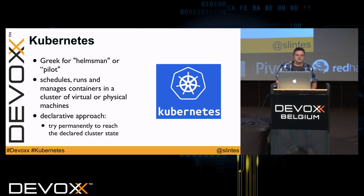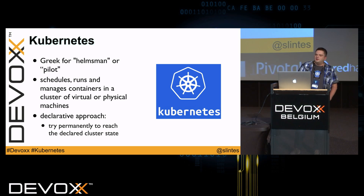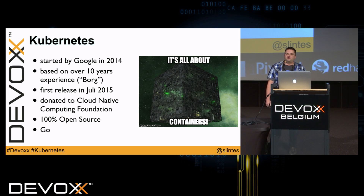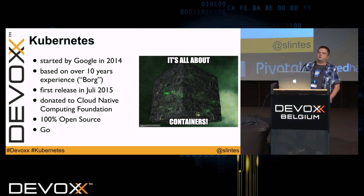Let's talk about Kubernetes. Kubernetes is Greek for helmsman or pilot and is used for orchestrating Docker containers in a cluster. The main thing about Kubernetes is you declare what you want to run and Kubernetes tries to reach that state. Kubernetes was started by Google in 2014, based on over 10 years of experience with their internal container platform called Borg. The first official 1.0 release was in July of last year; we are now at 1.4 with 1.5 in the pipeline. Google donated Kubernetes to the Cloud Native Computing Foundation — it's 100% open source and written in Go.